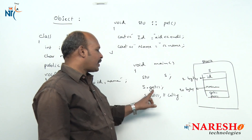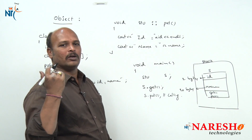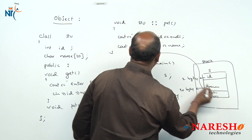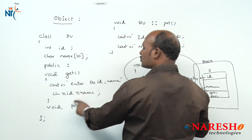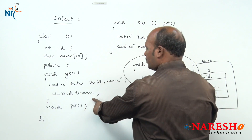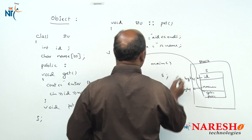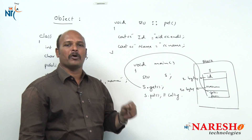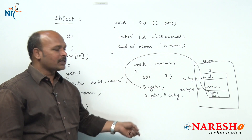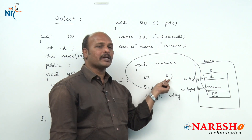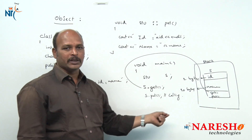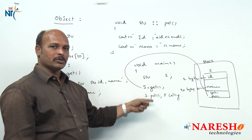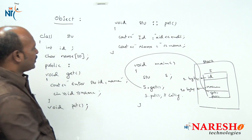When s.get is called, the program automatically goes to the get function, which reads values for id and name. When s.put is called, the program goes to the put function and prints id and name. The important point is: to access class members you must declare at least one object, and through that object you access the class members.